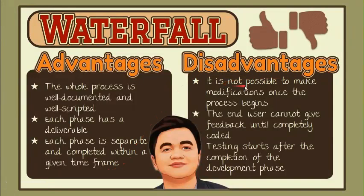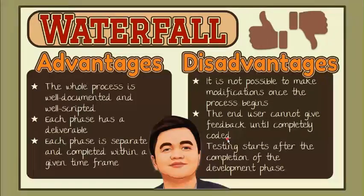For the drawbacks, this model is rigid. It is not possible to make modifications to the requirements once the process begins. There is no room for feedback during the development process, and therefore no room for reflection and revision. This model is not favorable for big projects which involve frequent requirement changes. The end user cannot give feedback until it's completely coded — for example, during development, the end users may realize that a feature being developed is no longer needed, meaning developers could be wasting time building it. Testing starts after the completion of the development phase, which may lead to late detection of bugs and design issues. Therefore, you don't know how stable the system is until the end.